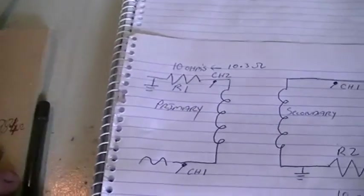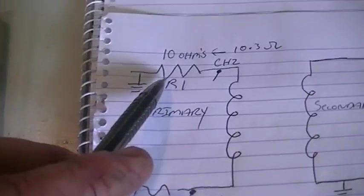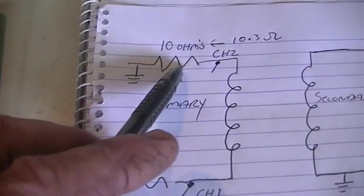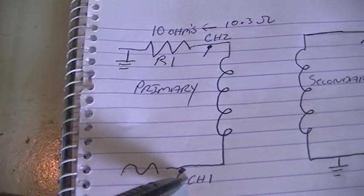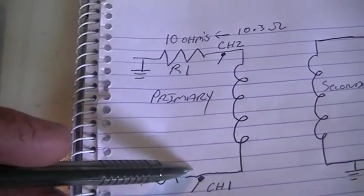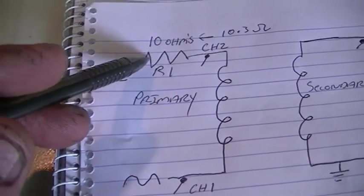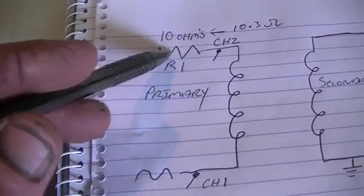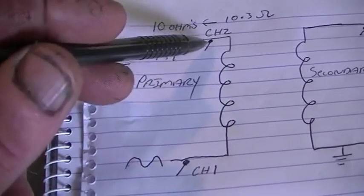Alright, so we're just going to run through what we've done here once again. Here we have our CVR on the input, our primary coil. Channel 1 was across the CVR in the coil. Channel 2 was across the CVR. So we've subtracted the voltage that was across the CVR to gain our voltage across the coil.